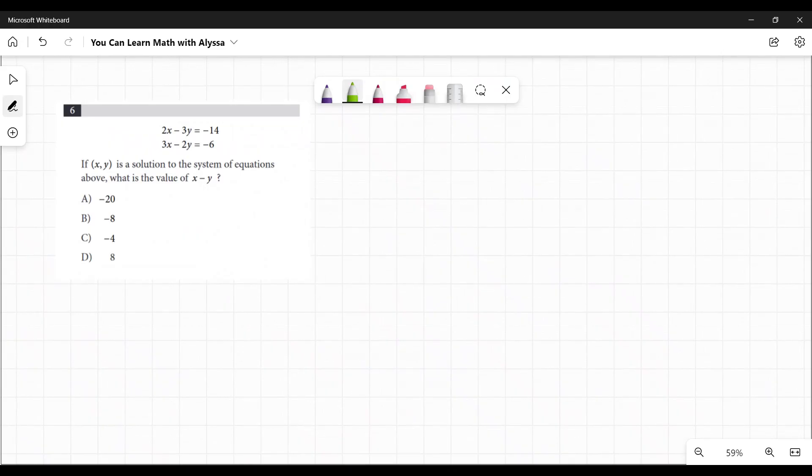Number 6. 2x minus 3y equals negative 14. 3x minus 2y equals negative 6. If xy is the solution to the system of equations above, what is the value of x minus y?